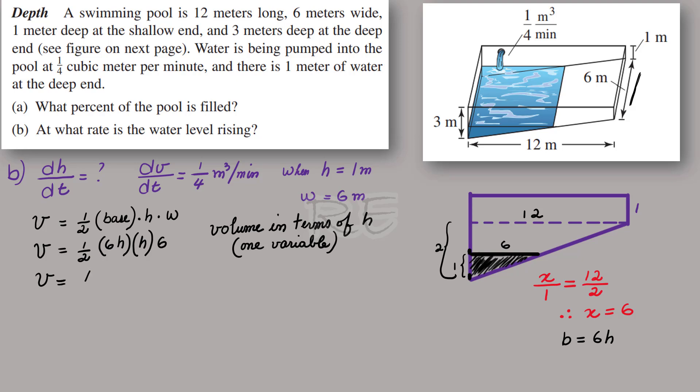So we want our formula in terms of h. Then we'll have just one variable to differentiate implicitly. So the volume is half of 36, which is 18, and h times h, which is h squared.